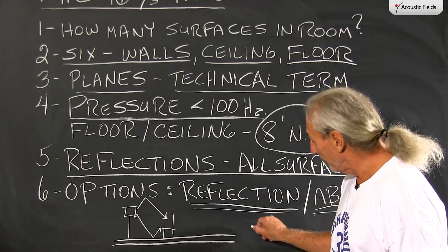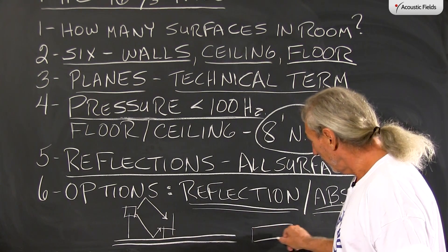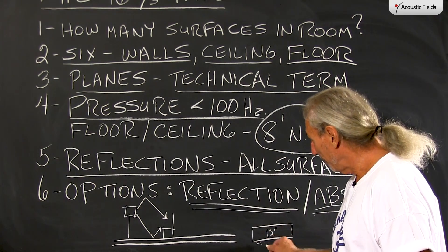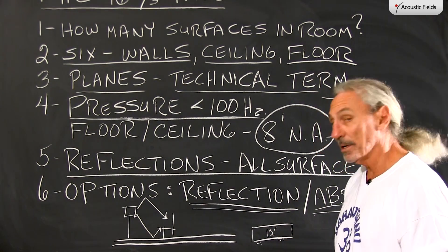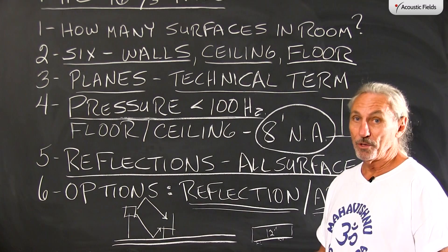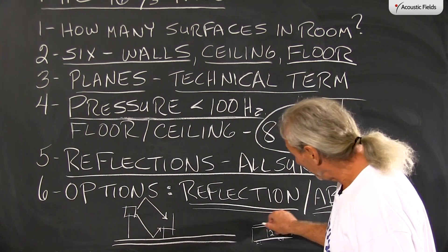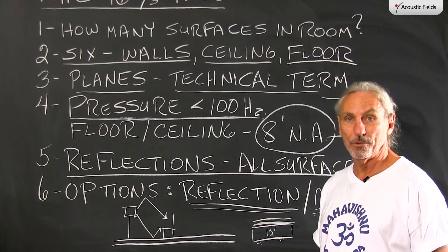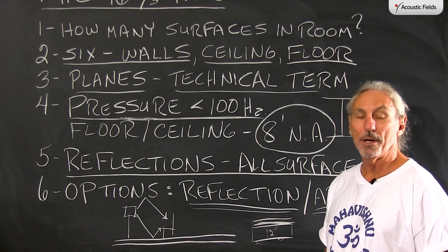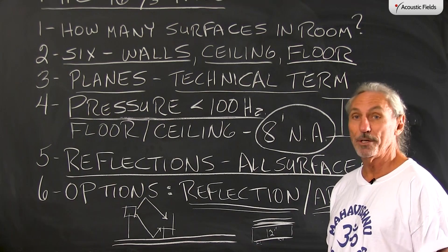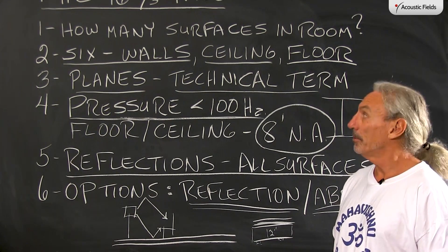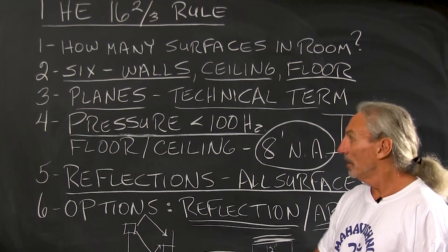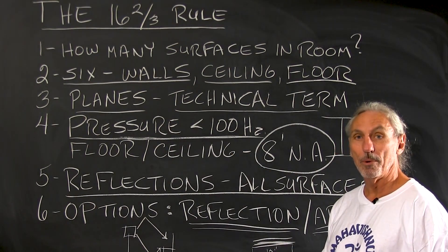We just finished a studio in Los Angeles where we did a 12-inch poured concrete slab on springs because of earthquakes. On top of the 12-inch slab we had numerous layers of material. So depending on usage, objective, and location, the floor is very, very critical. Just remember with the 16 and two-thirds rule: every surface, every plane, is important.